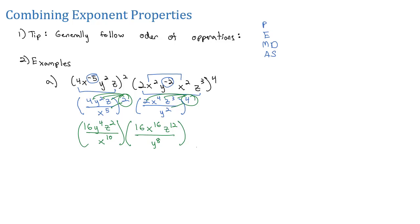Finally, we can simplify this by multiplying across and subtracting from the denominators. We've got 16 times 16, which is 256. On the y's, I see y to the 4th on top and y to the 8th on the bottom. When I subtract, I get y to the negative 4th. Since it's negative, I move it to the bottom as y to the 4th.